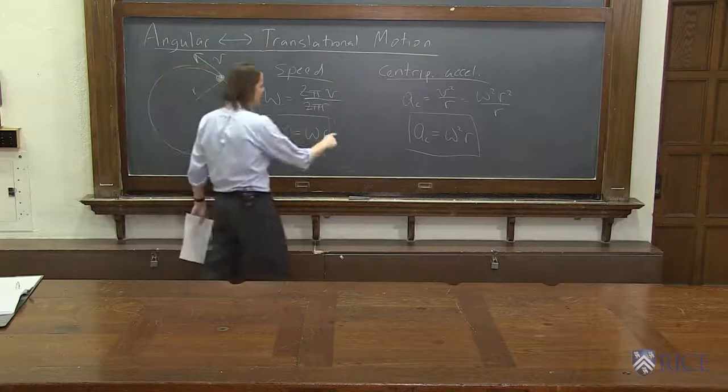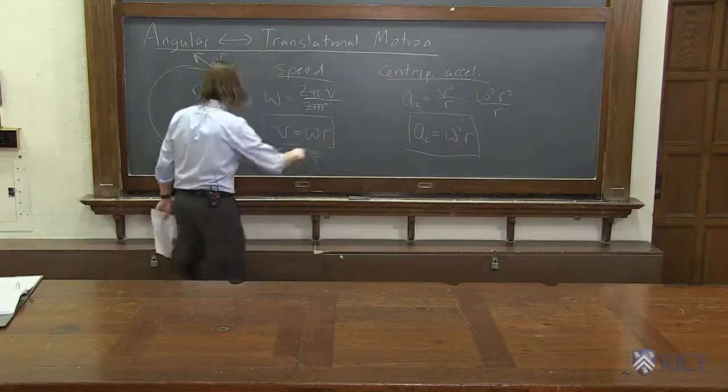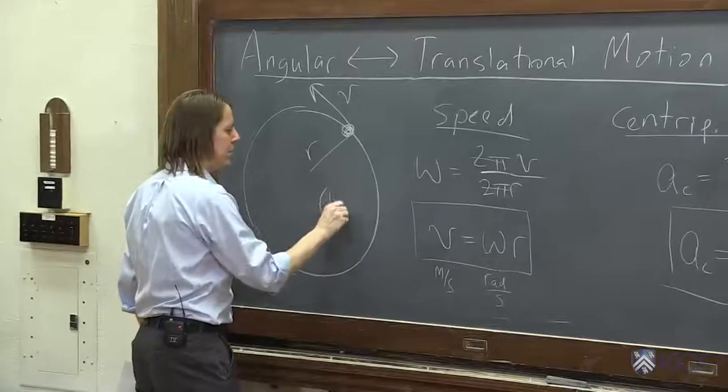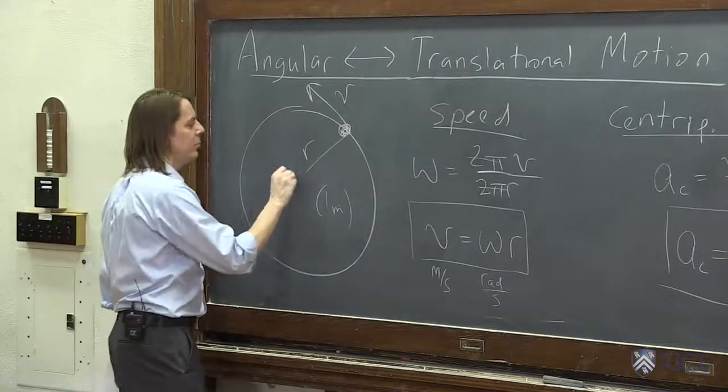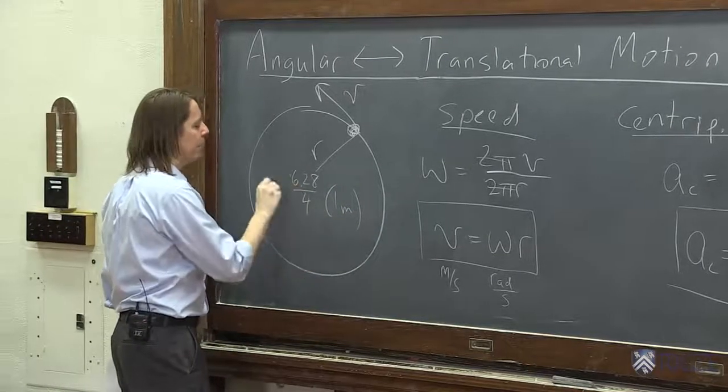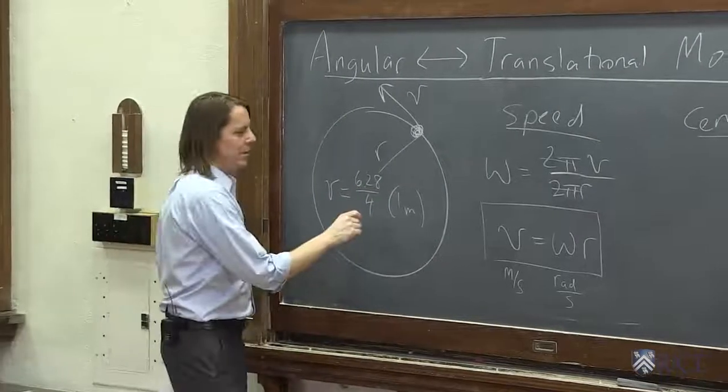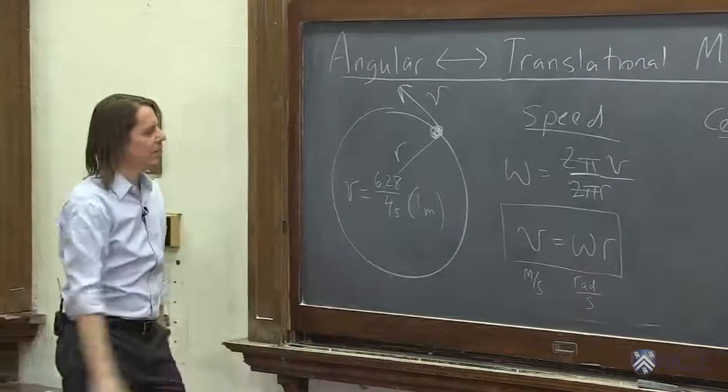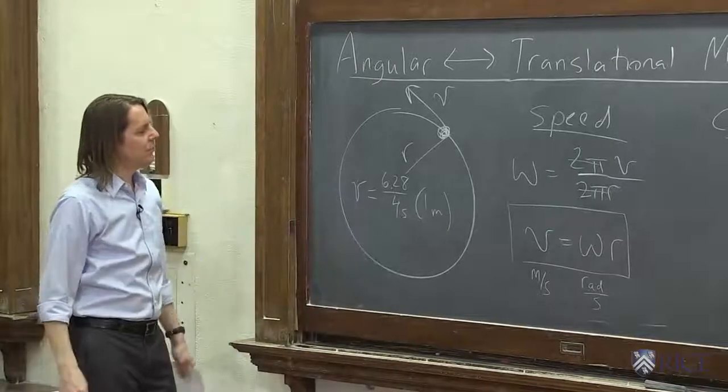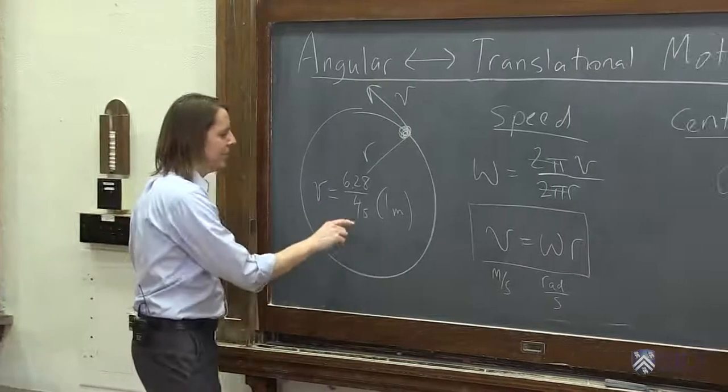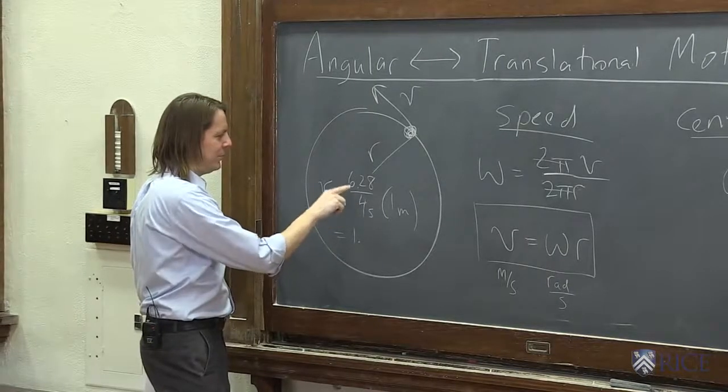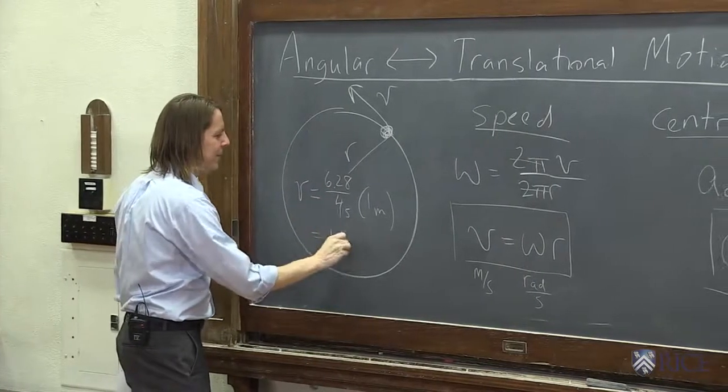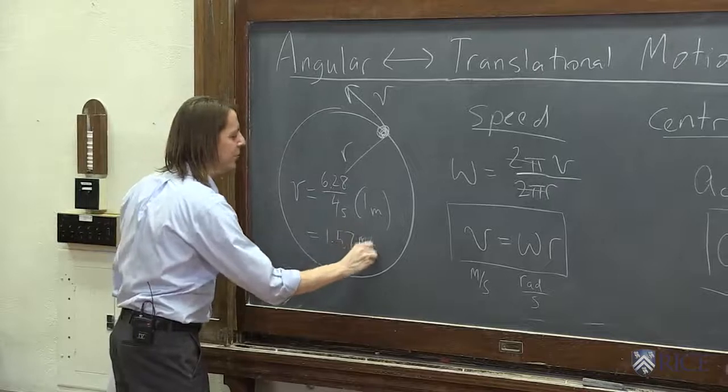Let's see. So its velocity as it goes around, the radius is one meter. Omega, we remember, is 2π over T. So 6.28 over 4. That would be the velocity. Four seconds, meters per second. What is that? Six, four goes in. Let's do the long division. Because I know you're on the internet to watch me do long division. Two left, 22, five. 1.57 meters per second.